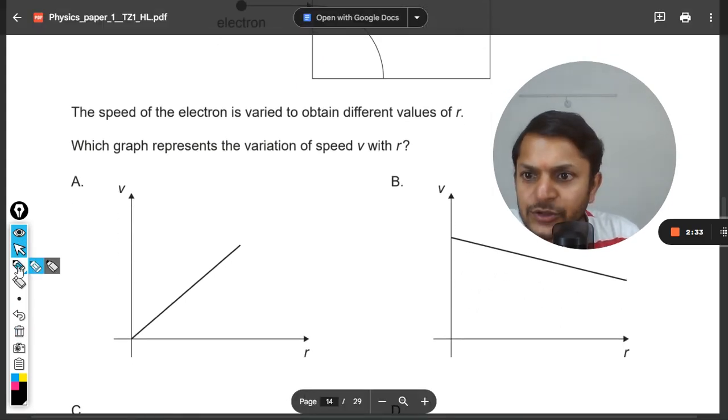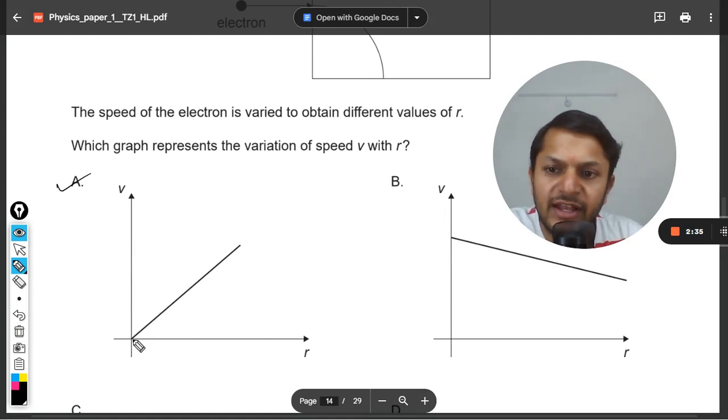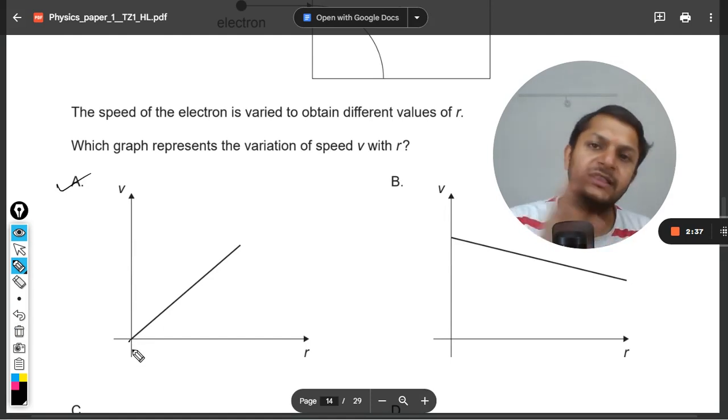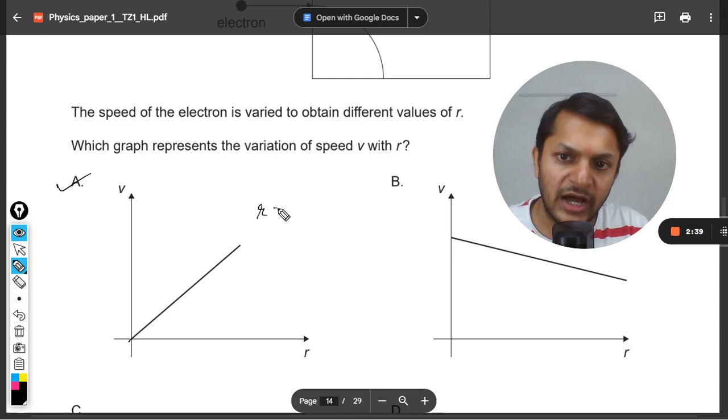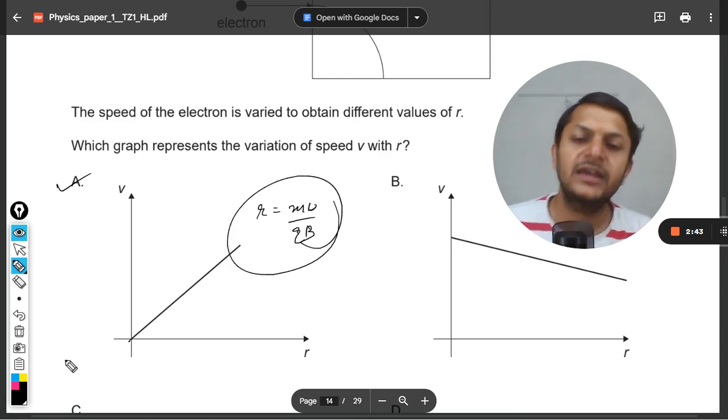The answer will be clearly A, because it is a straight line which is passing through the origin. This is how we do this question: r = mv/qB. This is a straightforward formula that we are using here.